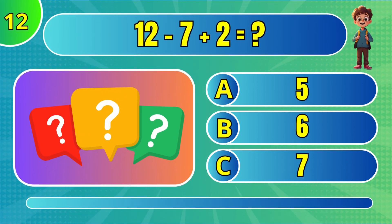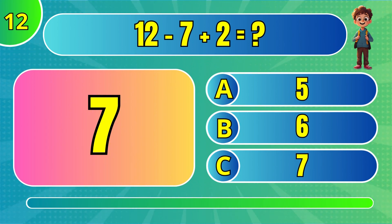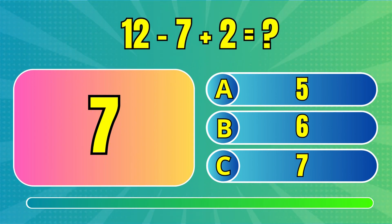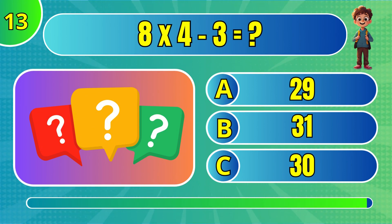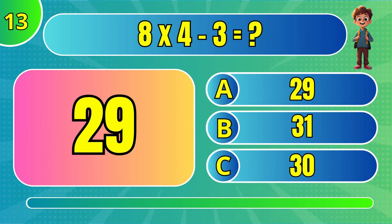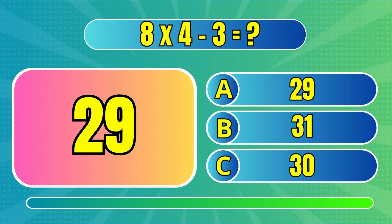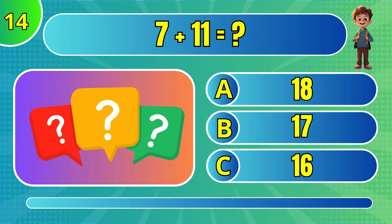What is 12 minus 7 plus 2? C. 7. What is 8 times 4 minus 3? A. 29.